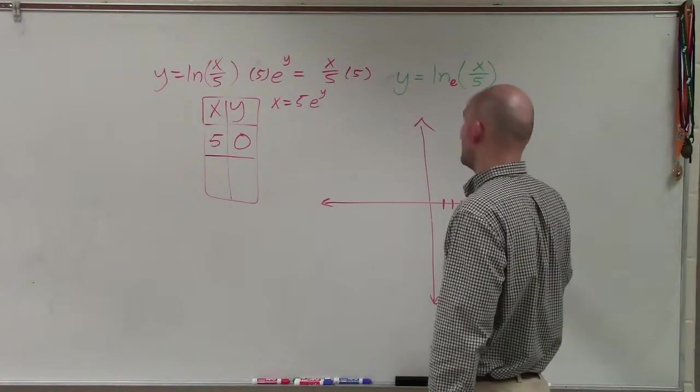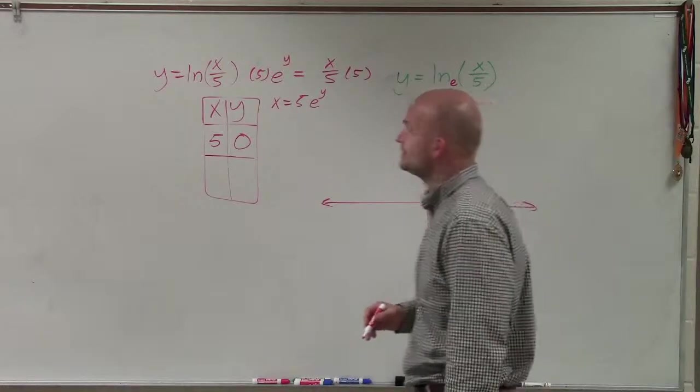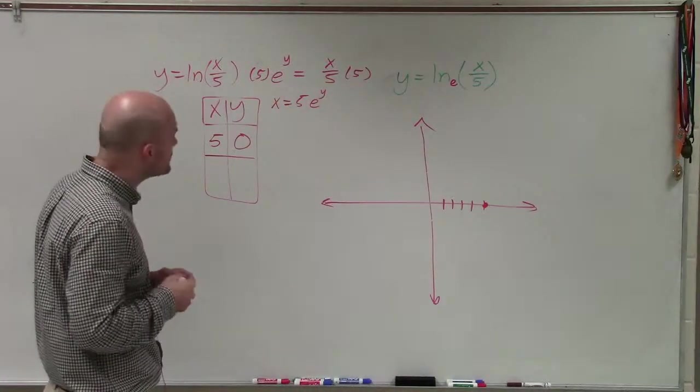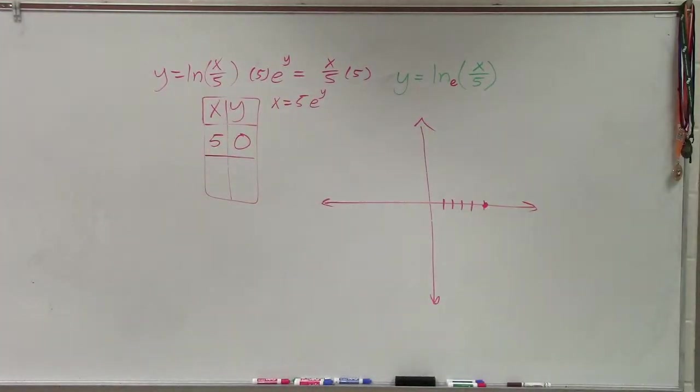But there's another kind of point that I need to be able to figure out. So 5 comma 0, 1, 2, 3, 4, 5. But now I need to go ahead and determine what other point can I use for there.